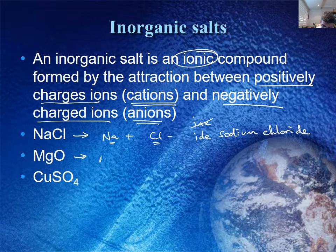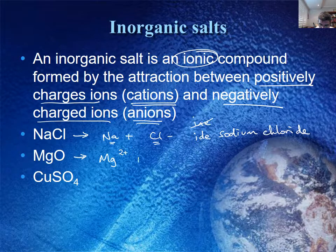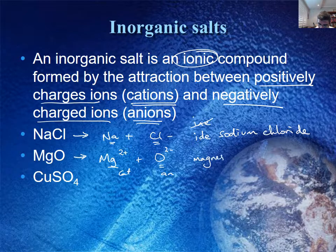In the second example we have magnesium, which is the cation — in this case it has a 2+ charge — and oxygen, which has a 2− charge. So magnesium is the cation and oxygen is the anion. These two attract one another to form the compound magnesium oxide. The oxygen has changed its name to become oxide.